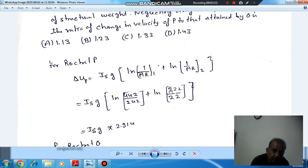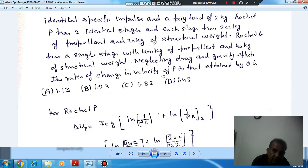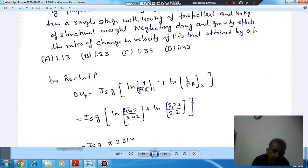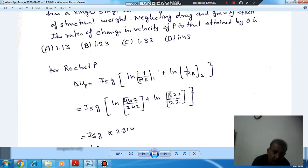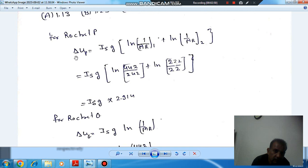After completion of first stage, the structure of first stage is removed. So the initial mass at the starting of second stage is 242 minus 20, which equals 222 kg. After completion of second stage, the propellant is consumed. So the final mass after completion of second stage is 22 kg. From this we have ΔUp = IsG × 2.914.